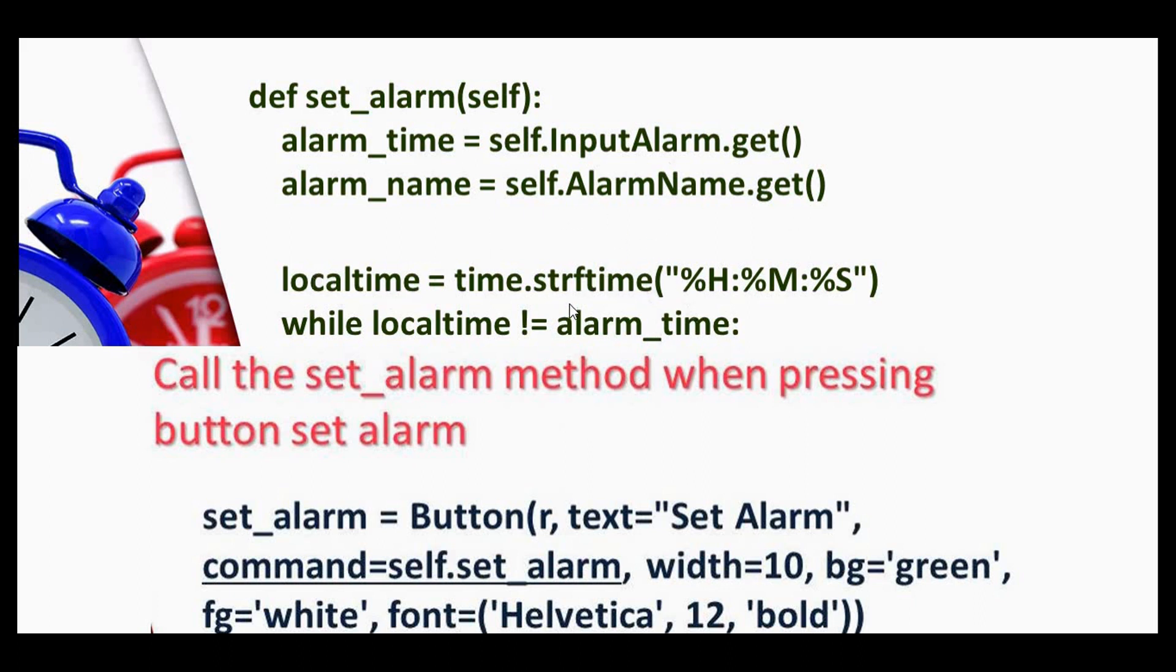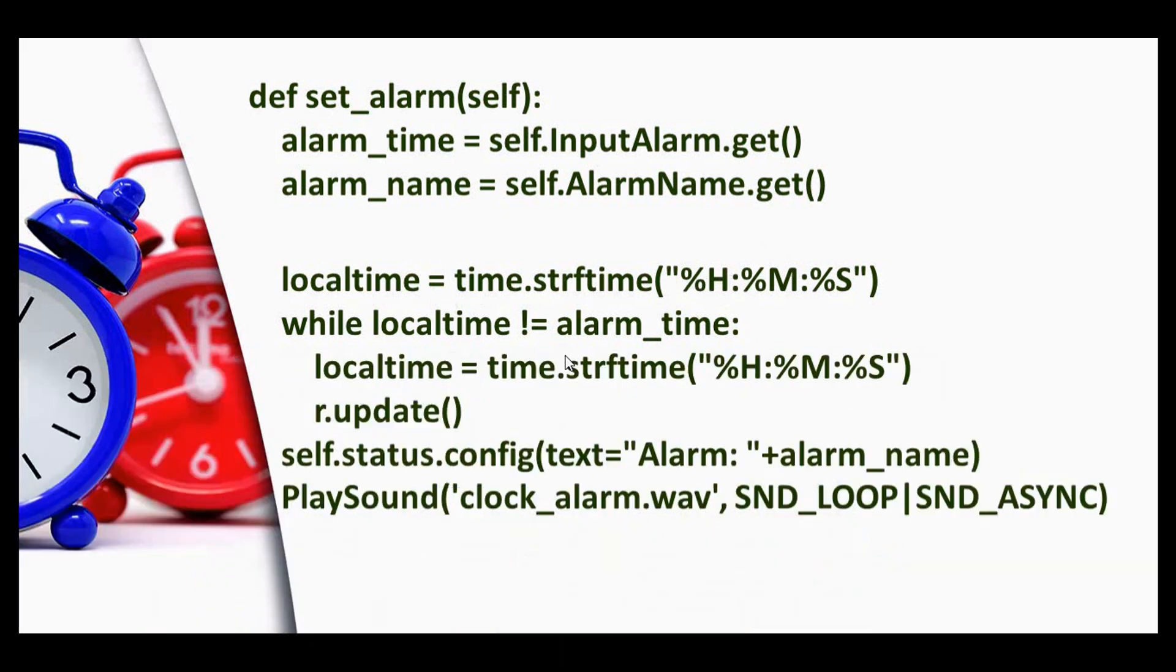This strftime will return a string which represents the time using this time object. A while loop is given with the condition: till this local time is not equal to alarm time, we are retrieving the local time - that is the current time - and I am calling this method called update, that is the root window tkinter.update method.